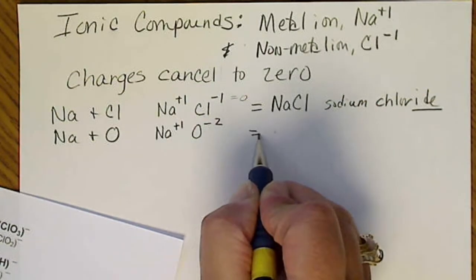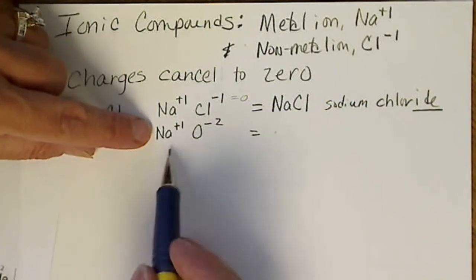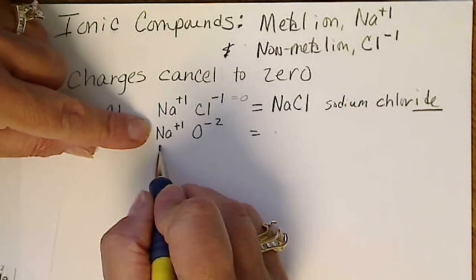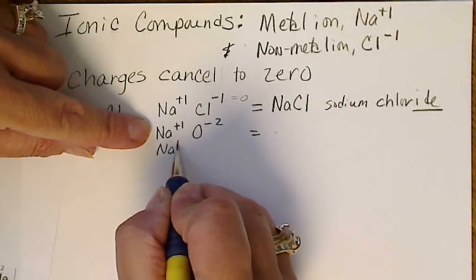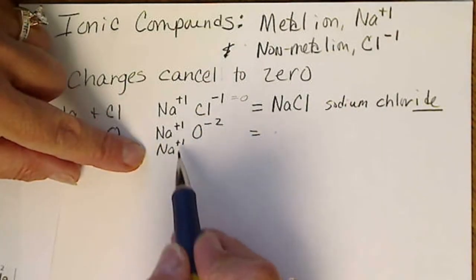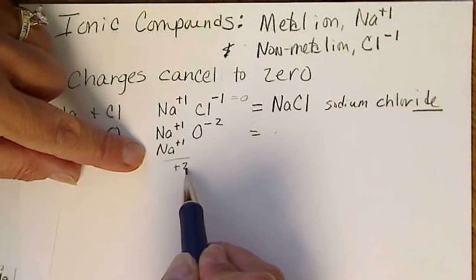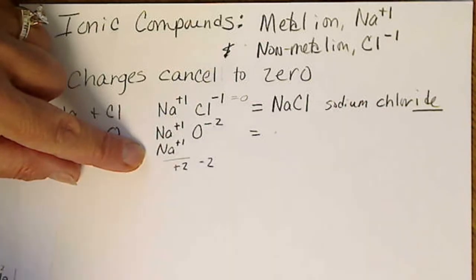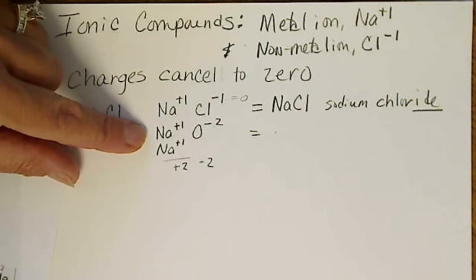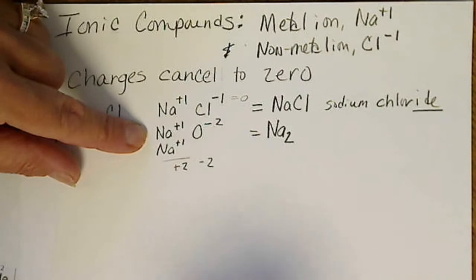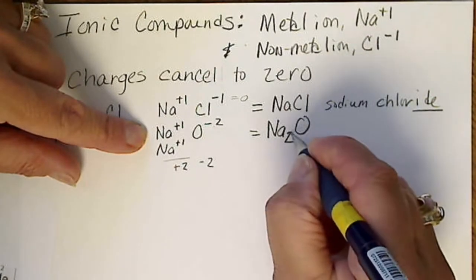And we're going to see that it takes 2 sodium ions for every 1 oxide ion. So in order for these charges to cancel to zero, 2 sodiums gives us a plus 2 charge. The minus 2 on the oxygen makes those charges cancel to zero, so this formula requires 2 sodiums for every 1 oxygen.